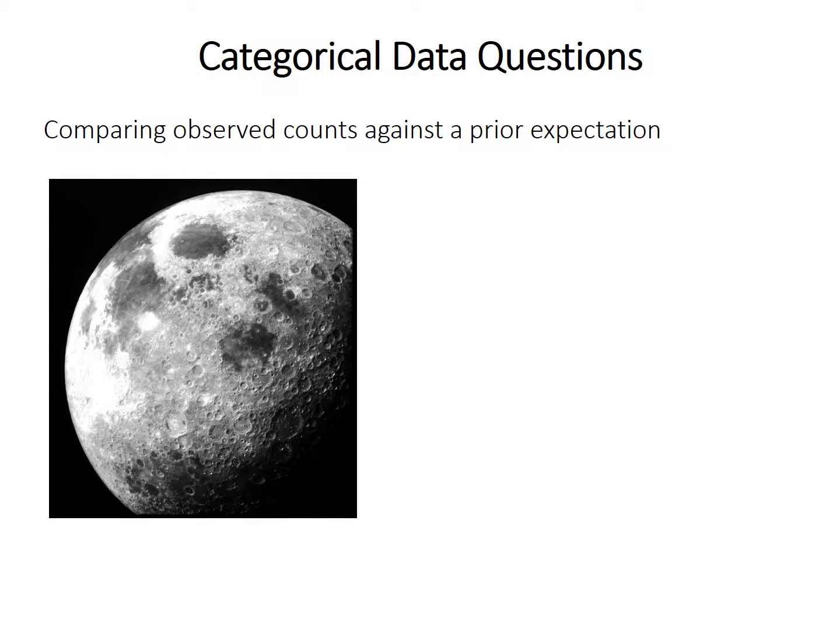When choosing what kind of categorical test you want to run, the main consideration is the question that you're asking. In one situation, you might have some prior expectations from theory or from some independent information for what the counts might be. Your goal then is to see if the counts in your sample agree with that prior expectation.